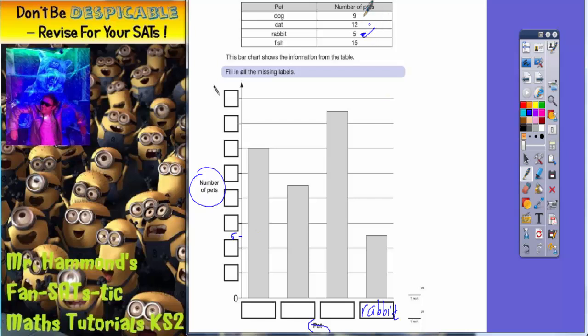The next, so rabbits is done. The next smallest one is dog on nine, so the next smallest bar is this one here. So the second bar must be dog, and this would be nine, whereas that is five.